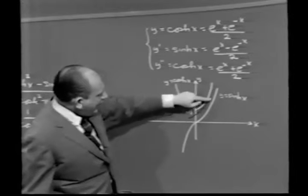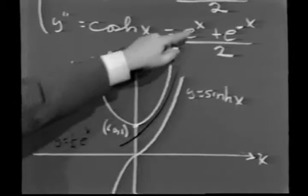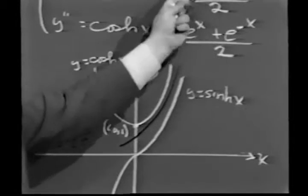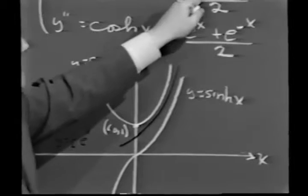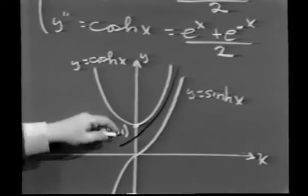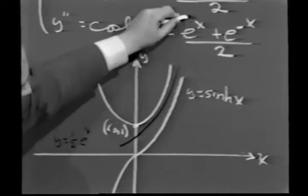Putting all these details together, first of all, the sinh is an odd function, meaning if we replace x by minus x, we change the sign. See, this is e to the minus x minus e to the x, which is the negative of what we have over here. Those are details which are easy for you to fill in. The graph y equals sinh x looks something like this.